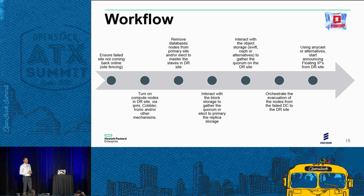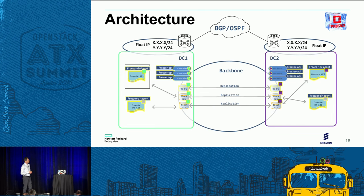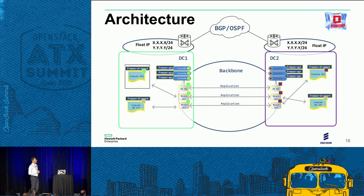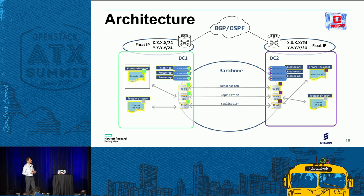The last step is handling the network. Floating IPs were routed through the failed site, so we need to redirect traffic to the recovery site. Our idea is to use anycast addresses for floating IPs and leverage ExaBGP. Through the Freezer DR agent running on all compute nodes, for every virtual machine that starts, the agent fetches the floating IP and starts announcing it to our autonomous system. The delay is the main problem limiting possible solutions.